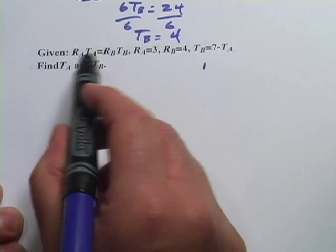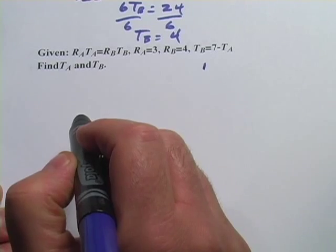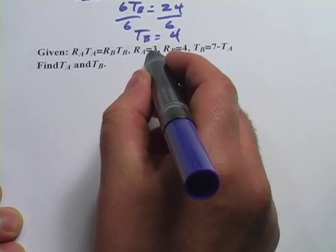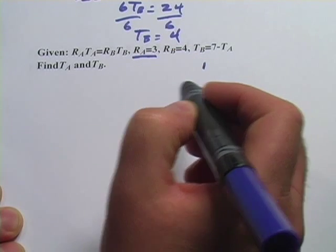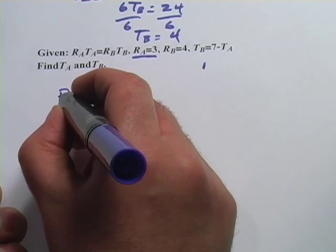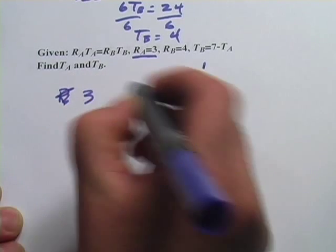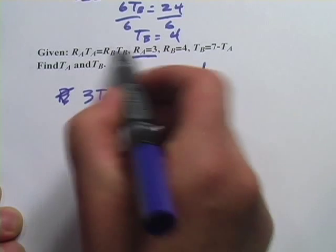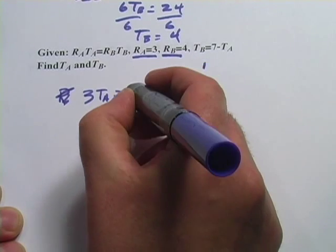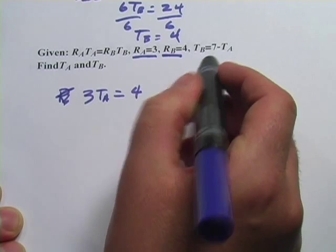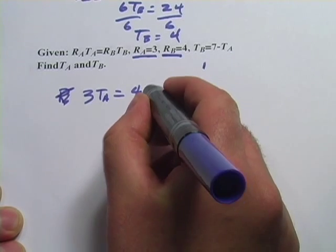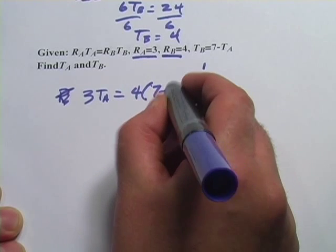We're going to start rewriting this equation and substituting stuff in. So r sub a times t sub a, we only have r sub a here, not t sub a. So we'll put in 3 for r sub a times t sub a equals, we have r sub b, that's 4, 4 times t sub b, and t sub b equals 7 minus t sub a. So I'm going to put that in, 7 minus t sub a.